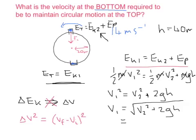And if we plug in the numbers, V2 again was 14 meters per second, 2 is 2, G is 9.8, and H is the 40 meters. So we plug all that in and we do a calculation, and we'll come to around about 31.3 meters per second.